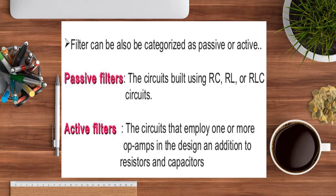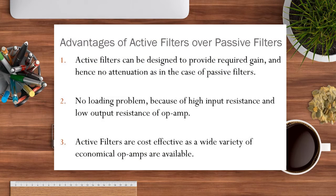Active and passive filters have been broadly classified. Active filters use transistors and op-amps; passive filters use RL, RC, and RLC circuitry. Advantages of active filters over passive include providing the required gain, no attenuation, no loading problems due to high input resistance and low output resistance of op-amps, and being cost effective for a wide variety of applications.